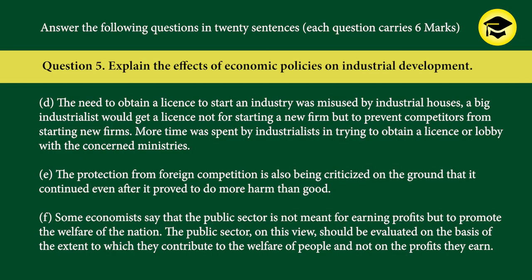D) The need to obtain a license to start an industry was misused by industrial houses — a big industrialist would get a license not to start a new firm but to prevent competitors from starting new firms, and more time was spent lobbying with concerned ministries. E) Protection from foreign competition is also criticized because it continued even after it proved to do more harm than good. F) Some economists say the public sector is not meant for earning profits but to promote the welfare of the nation, and should be evaluated on the basis of its contribution to people's welfare rather than profits earned.